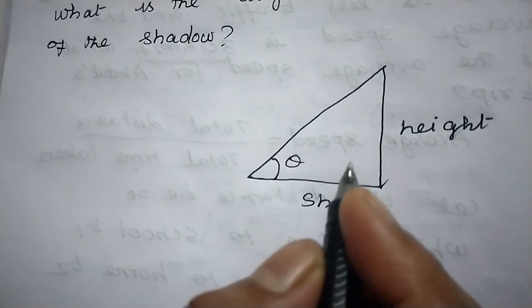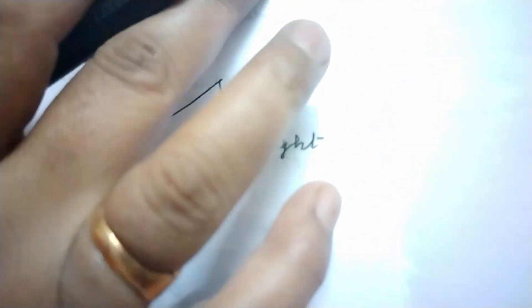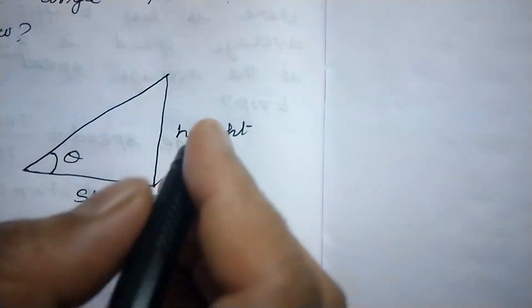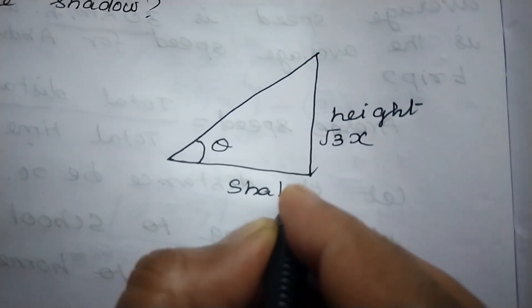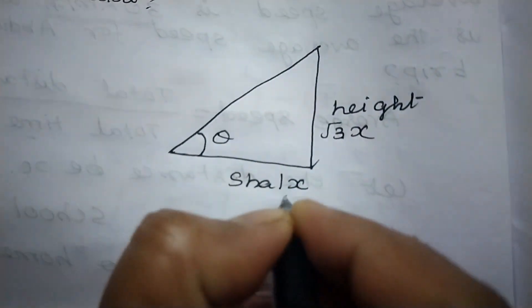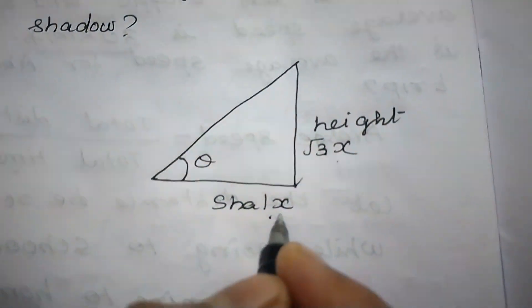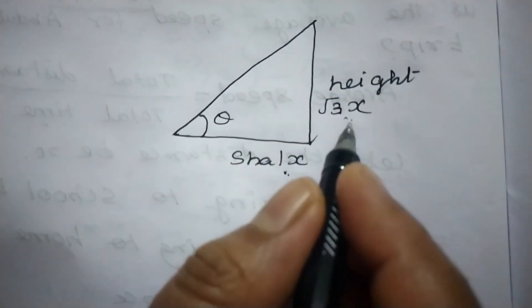So here what is the formula? The ratio of the height of a tower. So the unit is √x. I take it as x. So this one is √3x. Then the shadow is 1x. If it is √3x, then it is 1x. So √3x is to 1x.